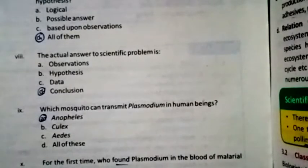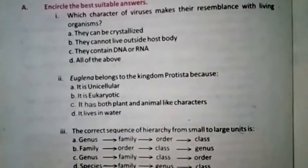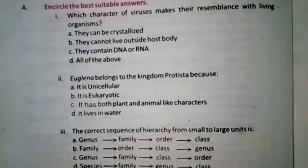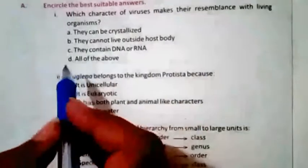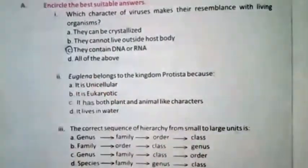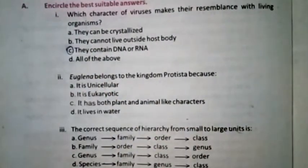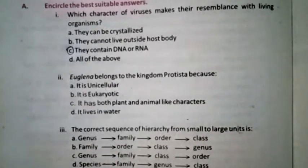Now we come to chapter three, which is Biodiversity. Question one: Which characteristics of a virus make them resemble a living organism — they can be crystallized, they cannot live outside the host body, they contain DNA and RNA, or all of the above? The right option is C — they contain DNA and RNA.